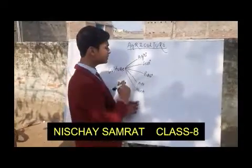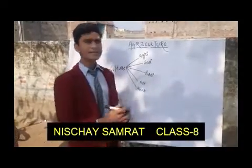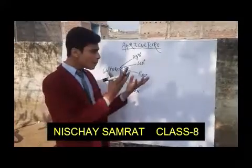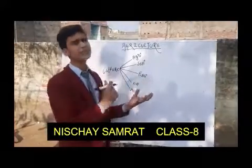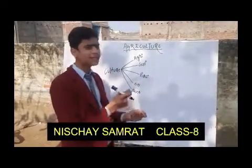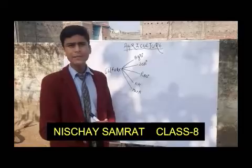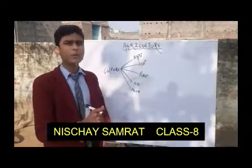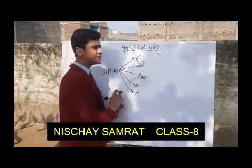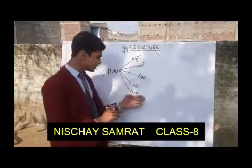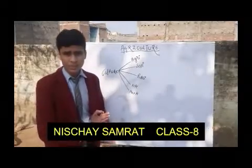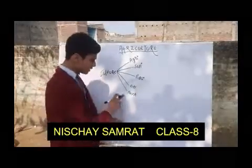Now, what is Pisciculture? In Pisciculture, the breeding of fish is done. The fish are mainly collected for selling purposes in the market for economic benefit. Now, what is Viticulture? In Viticulture, only grapes are grown — particularly grapes are grown.